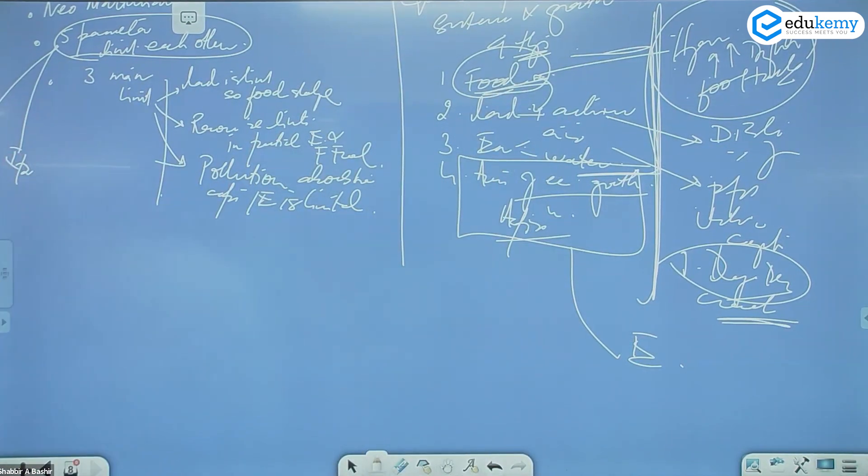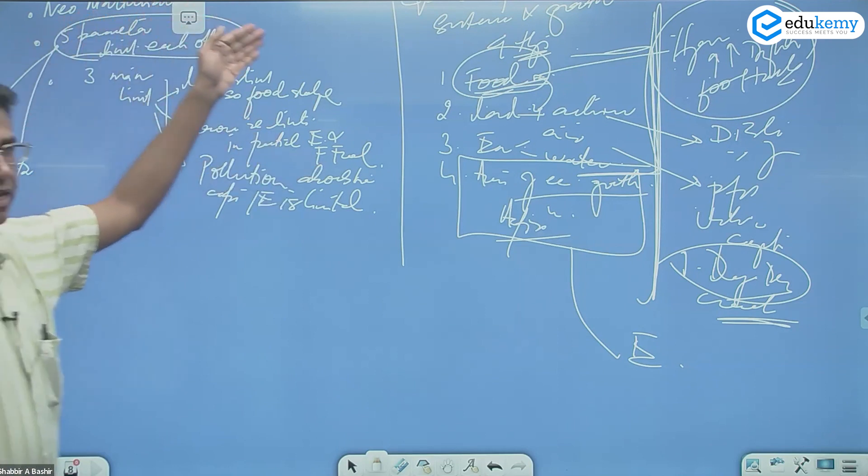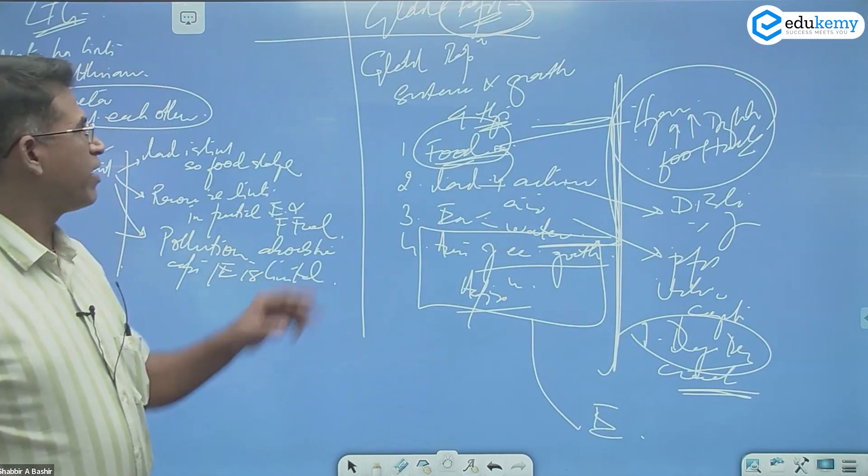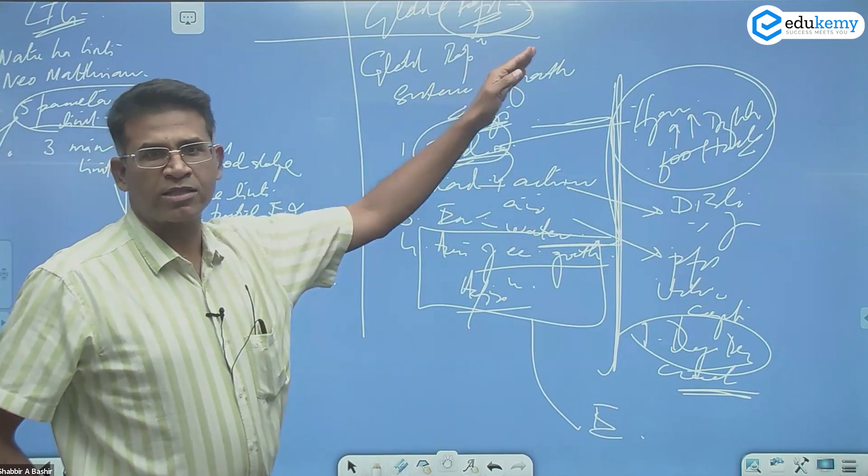So in your answer you don't have to write this. This is for your background, or maybe put a schematic. You have to write that correlating limits to growth with the global population, we can discuss the constraints under four broad elements: land limited, food limited, environment limited, and aspirations limited.